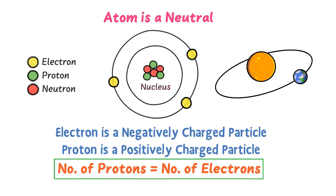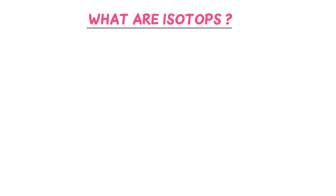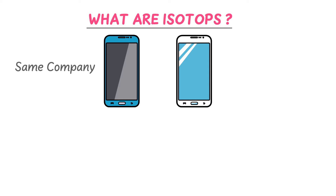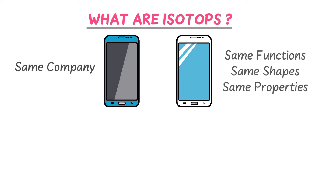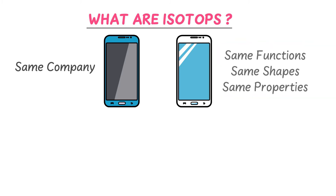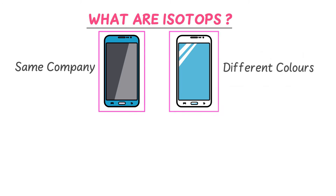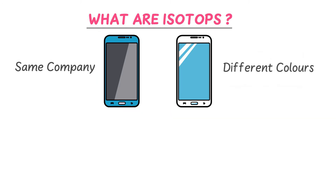Now, what are isotopes? Consider these cell phones — they are both launched by the same company, they have the same functions, same shapes, and same properties, but there is only one difference between them: a difference in color. One is white and the other is blue. Now consider carbon-12, carbon-13, and carbon-14.